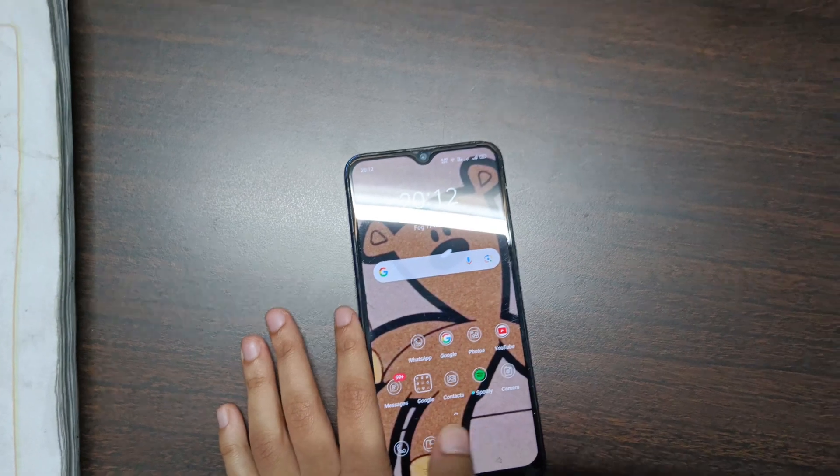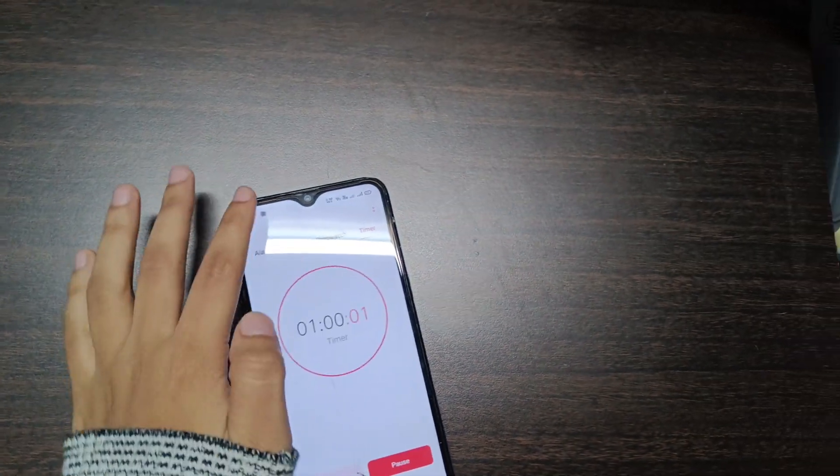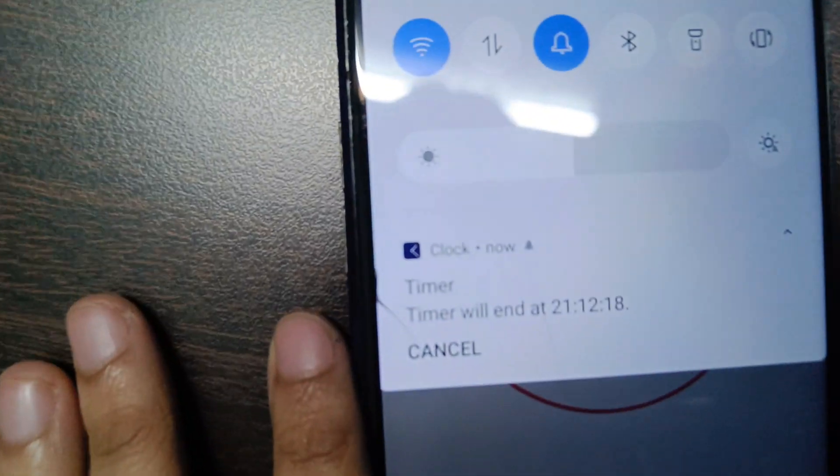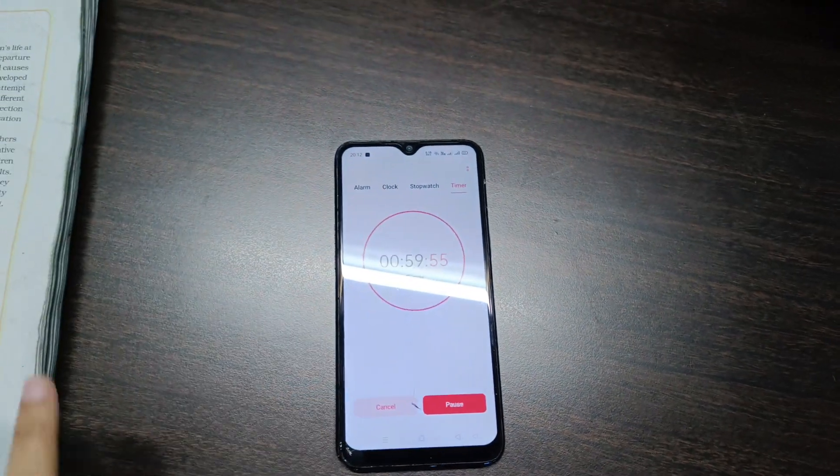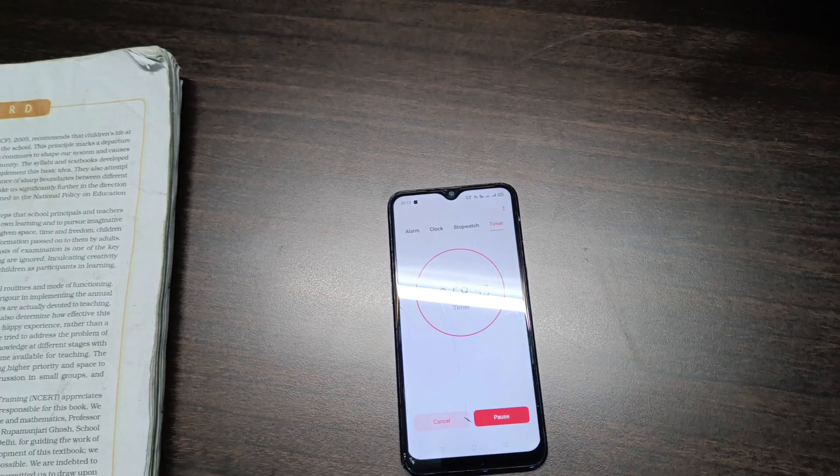8:12 PM right now. I'll place a timer of one hour. This timer will end at 9:12 PM. So right now I will start practicing the chapter Magnetic Effects of Electric Current.